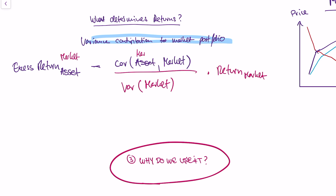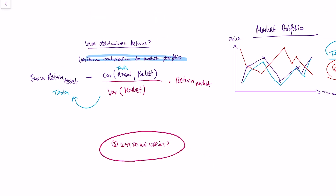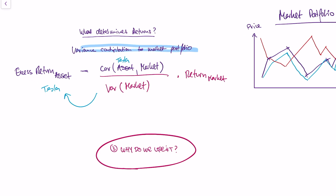If we have a different asset like Tesla, we can use this formula to understand its return — we just plug in the covariance between Tesla and the market. This is the CAPM formula. By calculating the return on the market, the variance of the return on the market, and the covariance between any asset and the market return, we can calculate the return of any asset. In the next video, I'll explain why this is such a breakthrough and why it's used so much in finance.